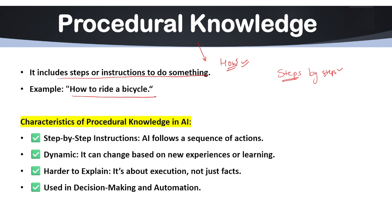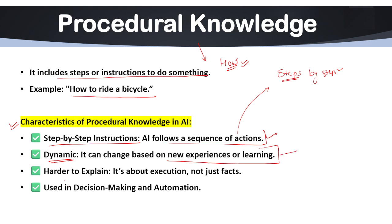Any AI system that uses procedural knowledge is basically used in automation, robotics and decision making. Its characteristics include: step-by-step instructions — AI follows a sequence of actions, like how to ride a bike or start your laptop. It is dynamic — it can change based on new experiences or learnings. It is harder to explain because it's about execution, not just facts. And it is used in decision making and automation.